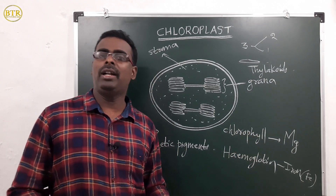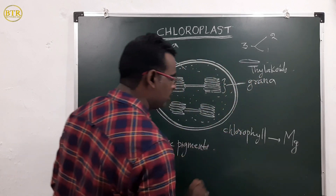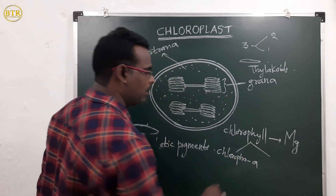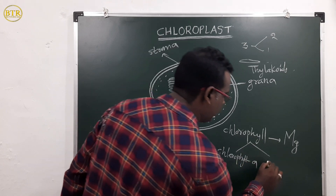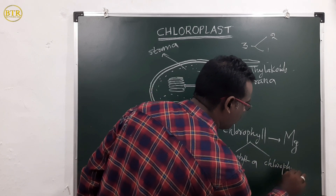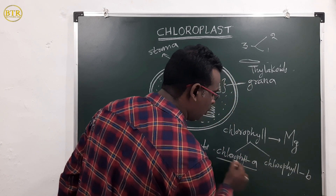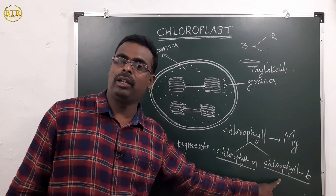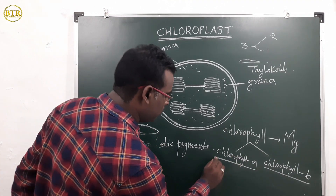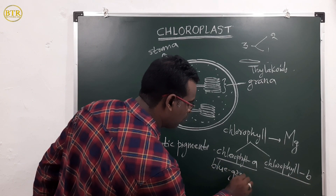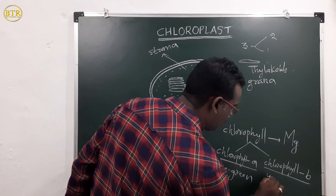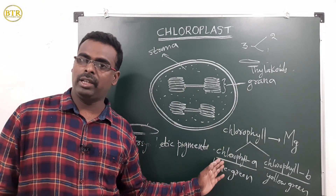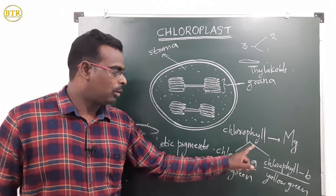There are two types of chlorophylls: chlorophyll A and chlorophyll B. Chlorophyll A is present in blue-green color, and chlorophyll B is present in yellow-green color.